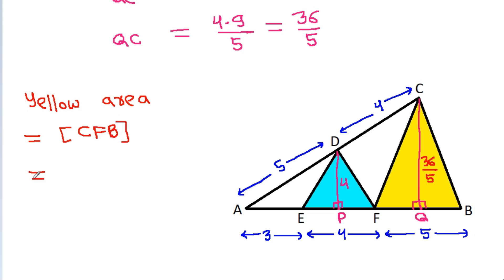That will be equal to 1/2 times FB times QC, which is 1/2 times 5 times 36 by 5. The 5 will get canceled, and 2 times 18 is 36.